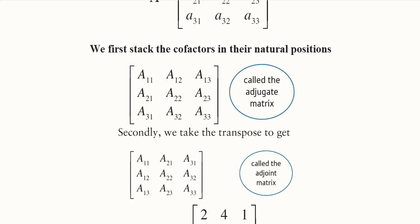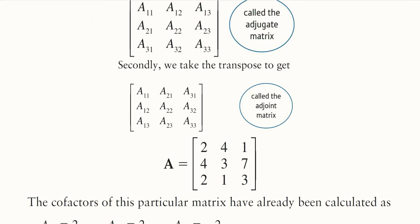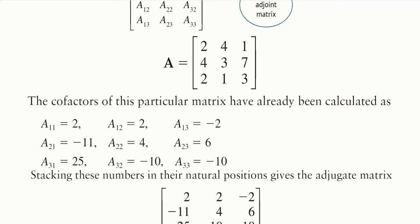The adjugate matrix is not the same as the adjoint. To get the adjoint, we transpose the adjugate matrix. As you can see, A11, A21, A31 are now in the first row instead of a column. Converting columns into rows gives us the transpose, and the transpose of the adjugate matrix is the adjoint matrix.